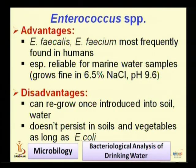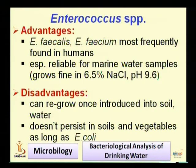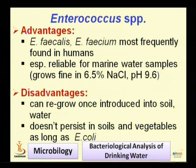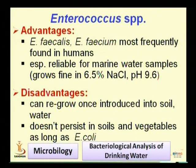Apart from E. coli, there are other organisms that can also be considered indicators of fecal contamination. These include Enterococcus — specifically Enterococcus faecalis and Enterococcus faecium, also formerly known as Streptococcus faecalis. These organisms are also frequently found in human fecal material. Specifically, they are reliable for marine water samples because they are able to survive in high salt concentrations of 6.5% NaCl and at a pH of 9.6.